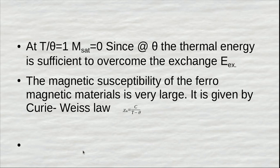The magnetic susceptibility of a ferromagnetic material is very large and positive. It is given by the Curie-Weiss law: χ_m = C / (T − θ), where C is the Curie constant and θ is the Curie temperature. Thank you, students.